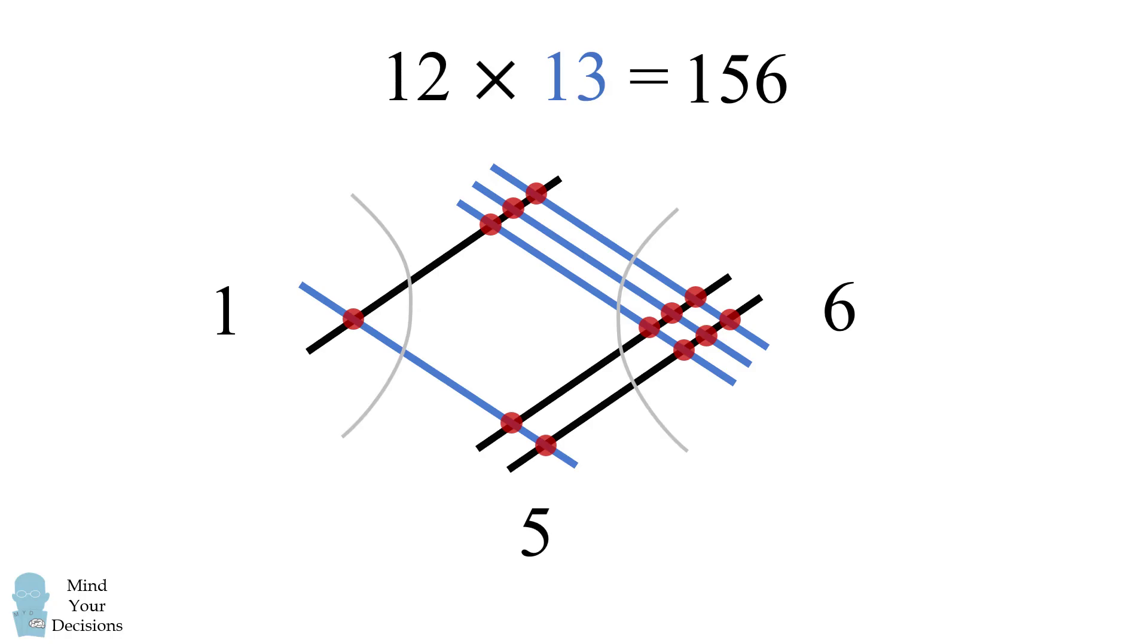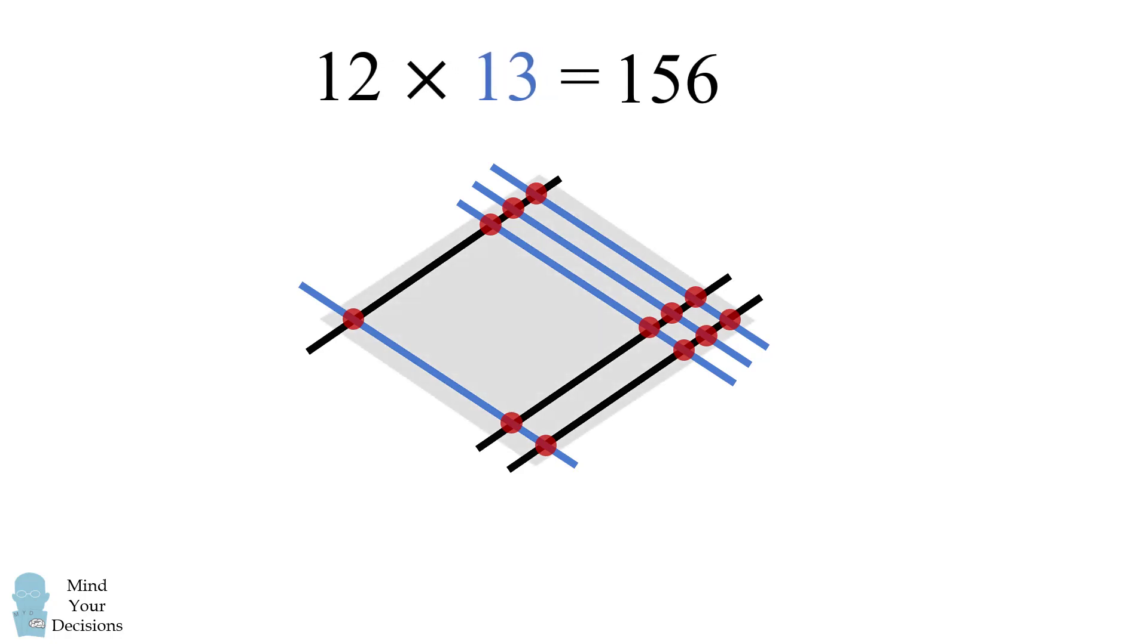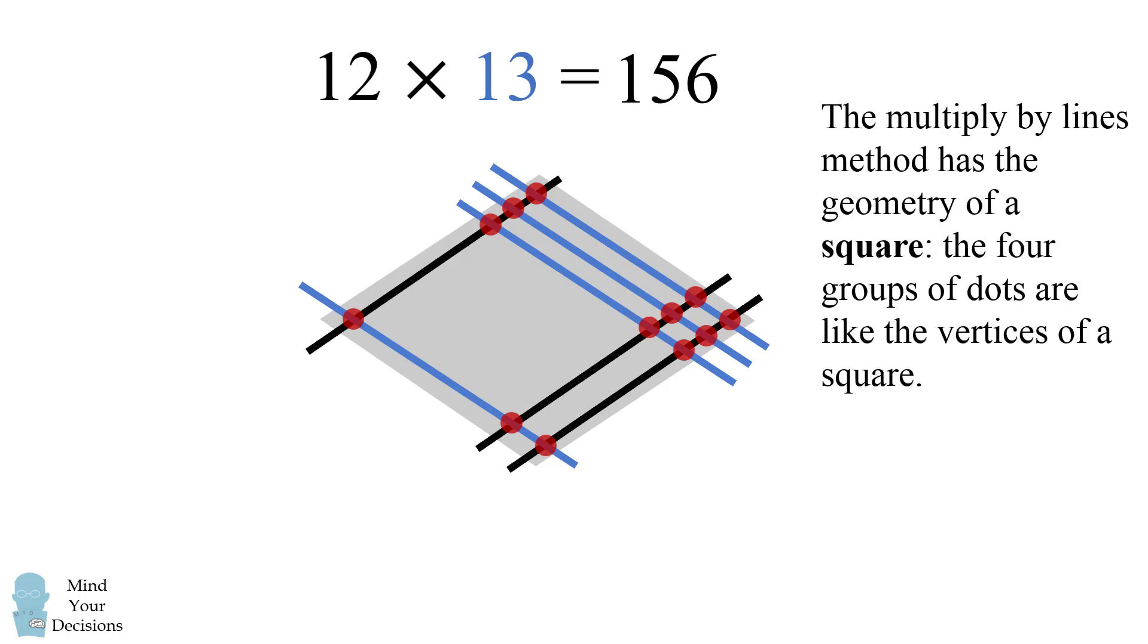So how can this help us in our multiply by lines? Well, notice our diagram if we remove these vertically aligned groups. And then we look at this lattice that's in the center of the diagram. The multiply by lines method actually has the geometry of a square. The four groups of dots are like the vertices of a square. So let's use group theory on this square-like figure. What will happen?